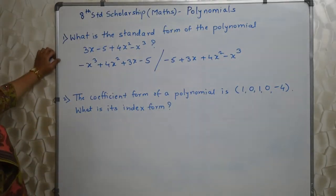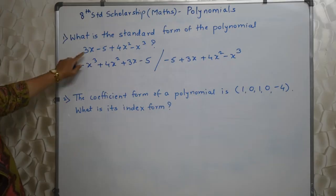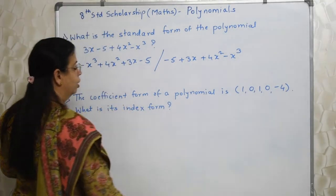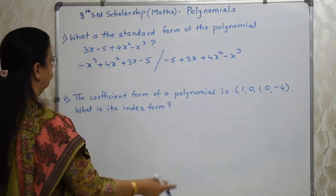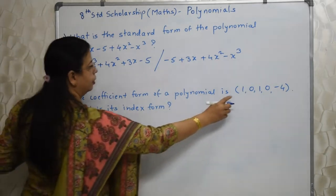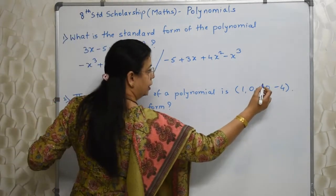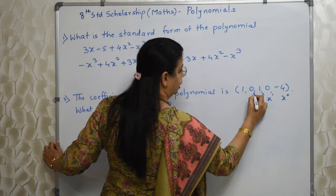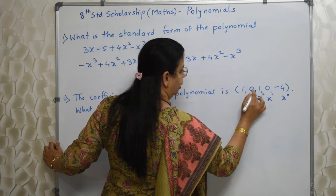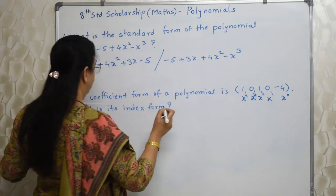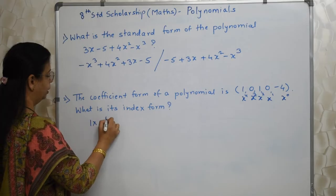The coefficient form of a polynomial is [1, 0, 1, 0, -4]. What is its index form? This type of form is the index form, and this is the coefficient form. So how to convert this coefficient form into an index form? We assign: x raised to 0, x raised to 1, x raised to 2, x raised to 3, and x raised to 4. So we get: 1 into x raised to 4.